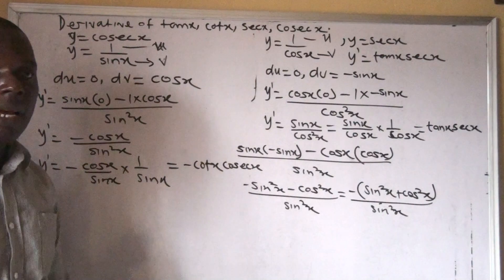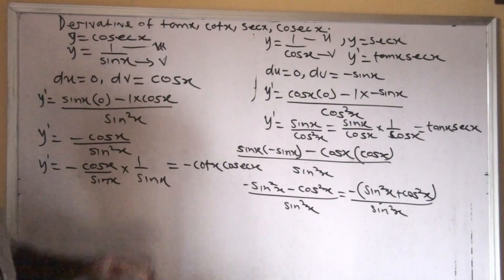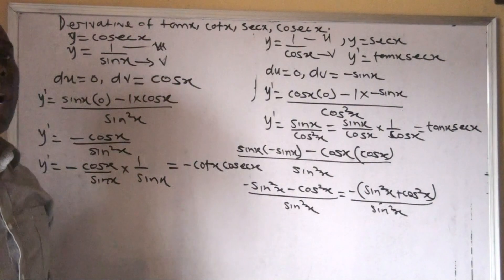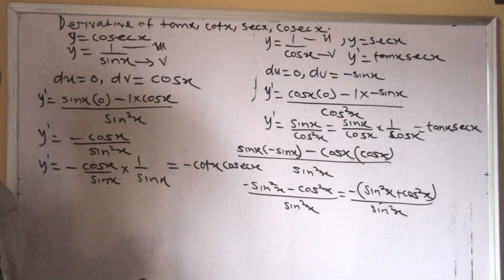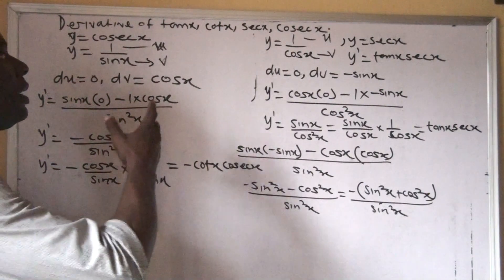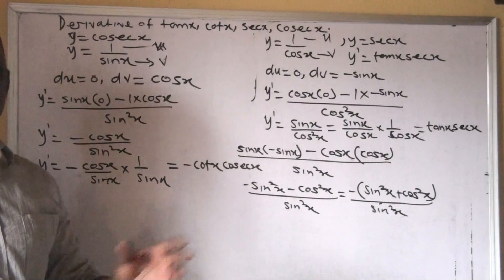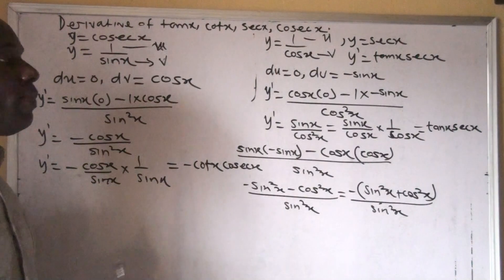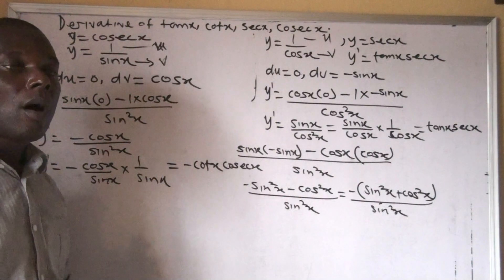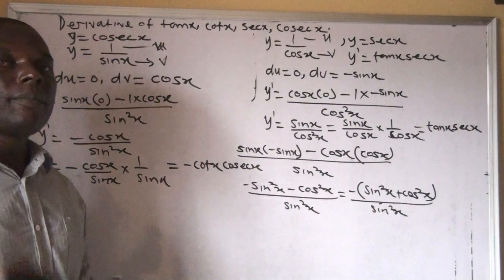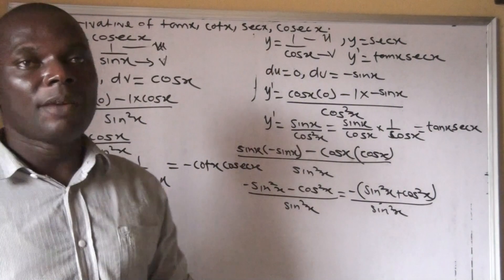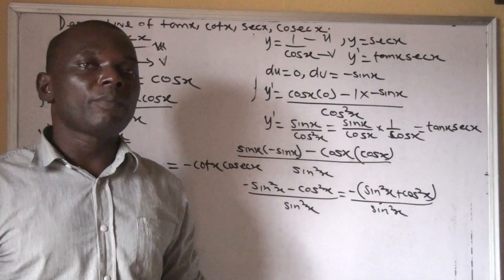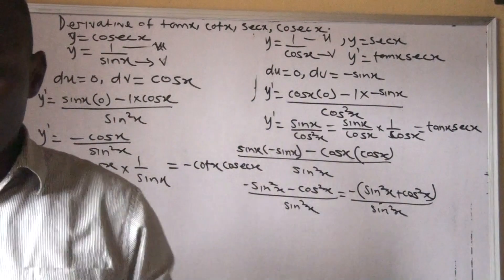This is how we can find the derivatives of tan x, cot x, sec x, and cosec x using the quotient rule. Firstly, you must know their identity — what they represent, their inverse — and from there you will establish the formula, and bit by bit the answer will surface. Please help me subscribe and also share this to other platforms. Have a nice time, see you in my next virtual class.